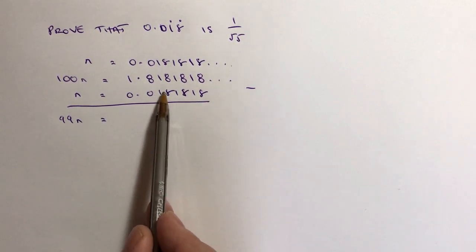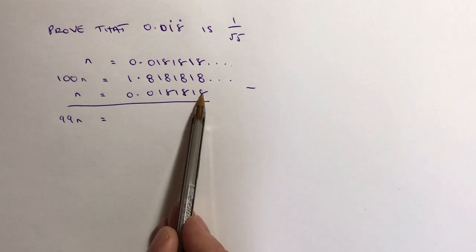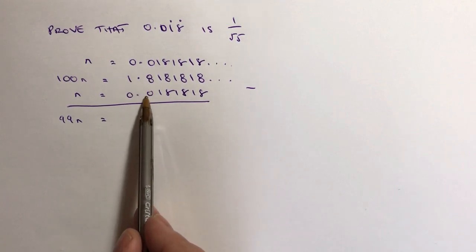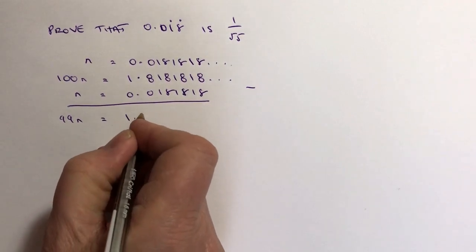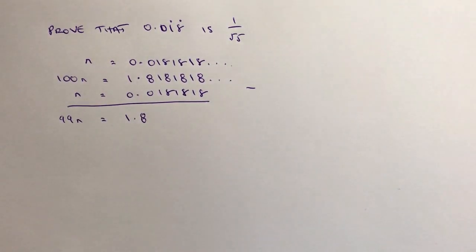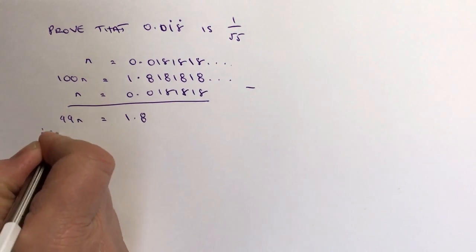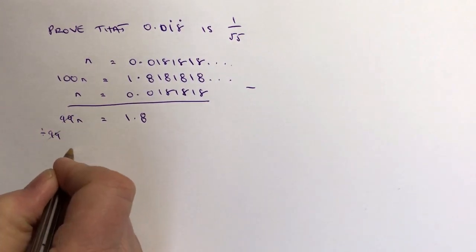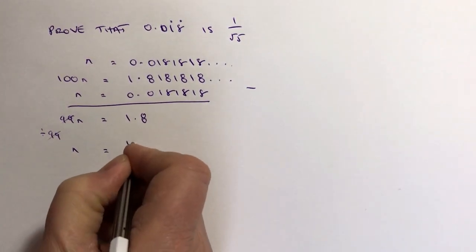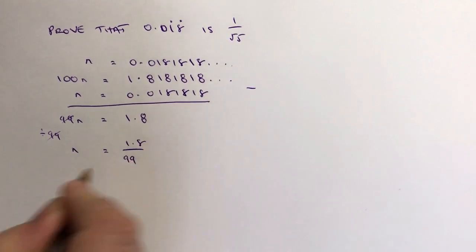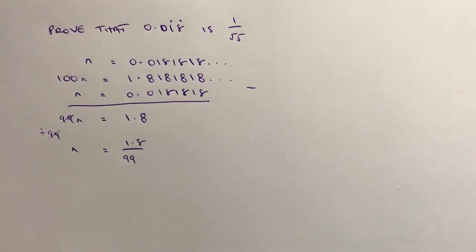All of these recurring numbers are going to go and I end up with 1.8 take away 0, which is actually 1.8. Then it's the same process we've followed with the other videos within this playlist where we divide through by 99, which means I get one value of n, and end up with 1.8 over 99.